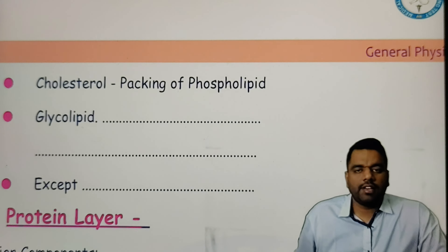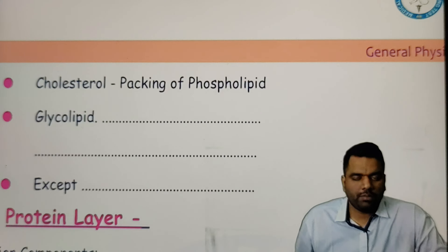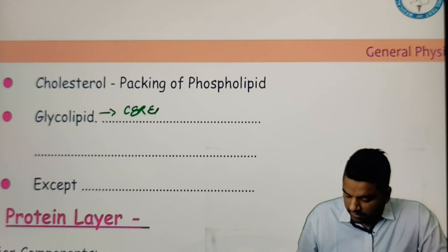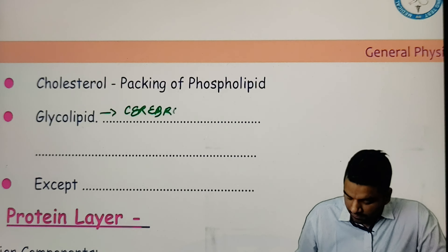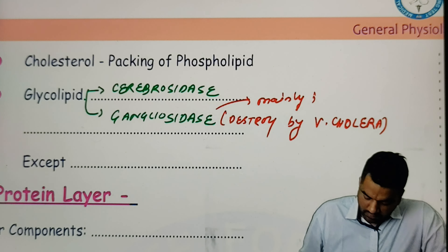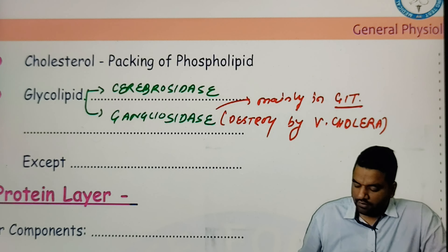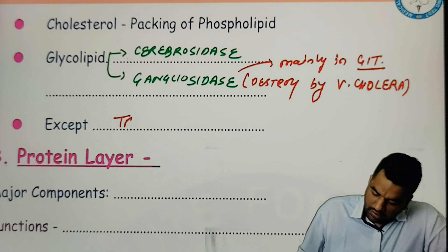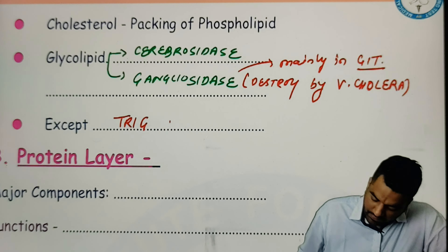The next component of this lipid layer is cholesterol — this is required for packing of the phospholipid. Then the glycolipid, which is of two types: number one is cerebroside, and number two is ganglioside. This ganglioside can be destroyed by Vibrio cholerae, and this is mainly in GI tract — that's why in cholera there is rice-water diarrhea. The component which is not utilized for making this lipid layer from fatty acid is triglyceride.